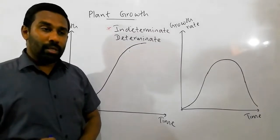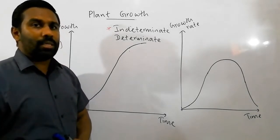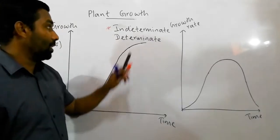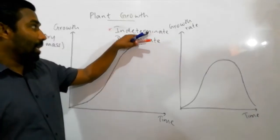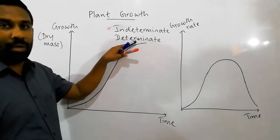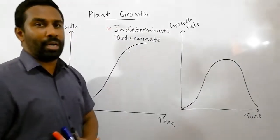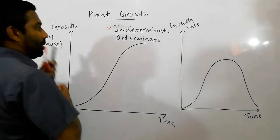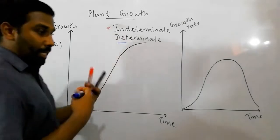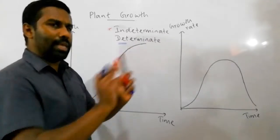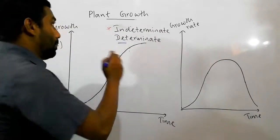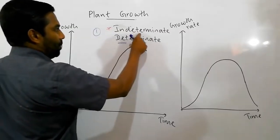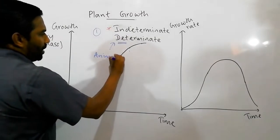Annual plants have a lifespan of one year; biennial plants have a lifespan of two years. Both annual and biennial plants show determinate growth — they grow up to a certain size within a particular period, then reproduce and die. Animals also show determinate growth; your own growth happens within a particular period and then stops.